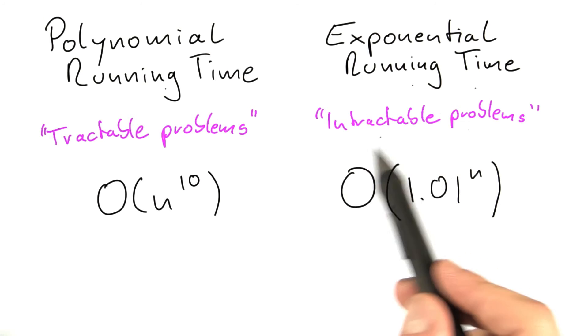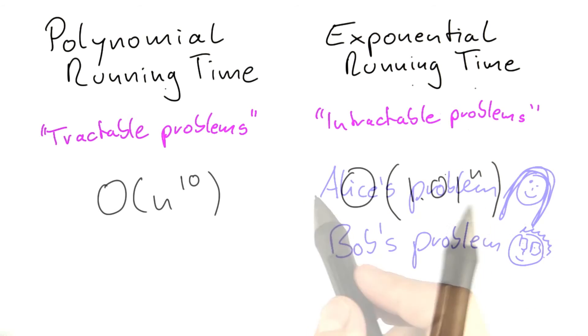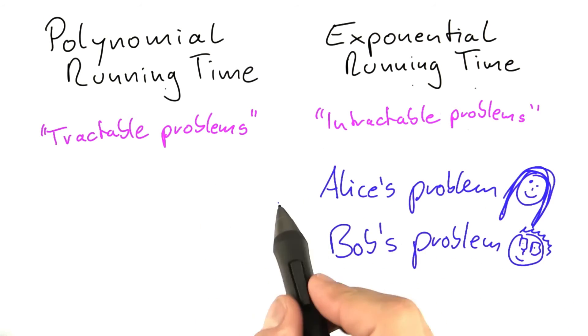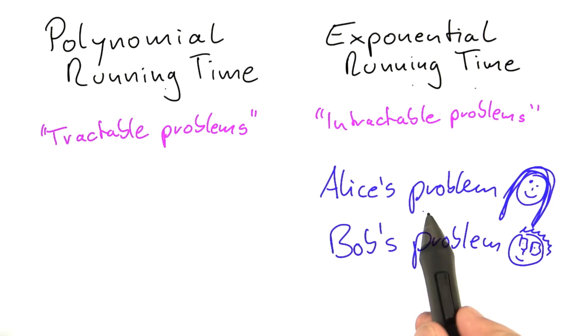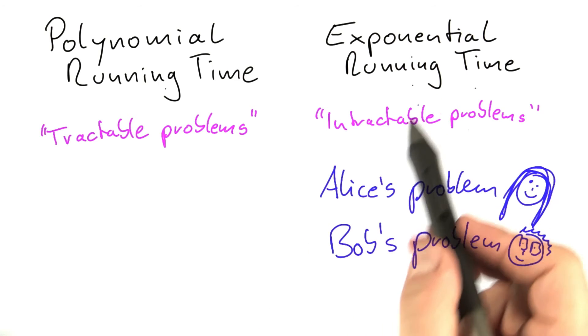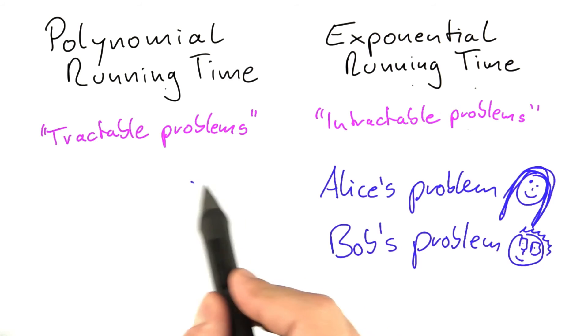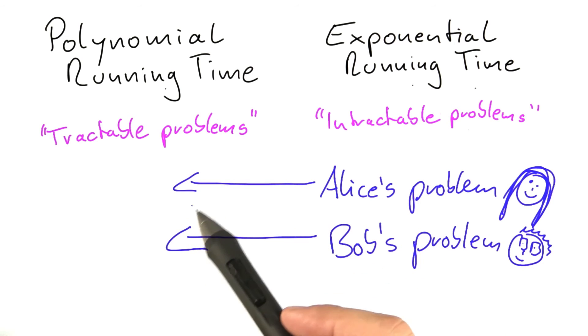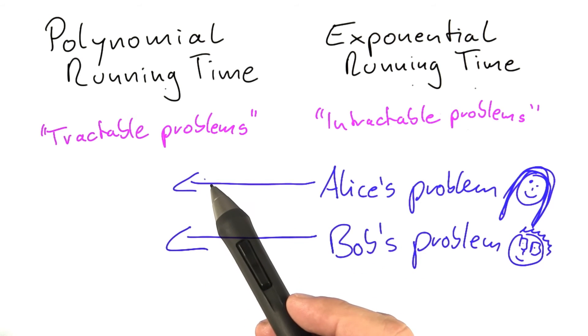But in later units we'll see how you can deal with exponential running times. The question we're now dealing with is: for both Alice's problem and Bob's problem, are they intractable or can we find a polynomial time algorithm that would show these problems are tractable?